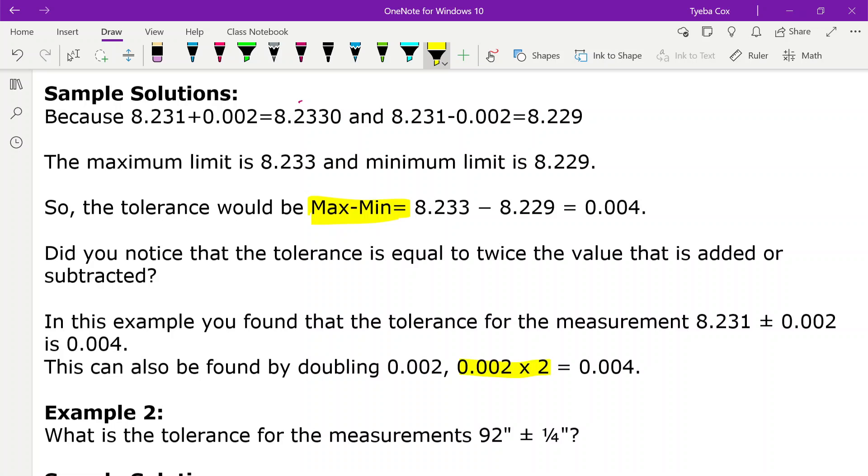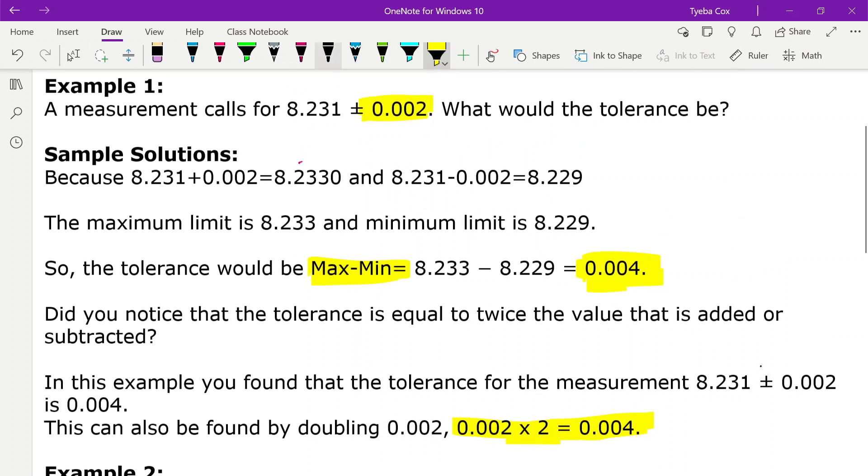we end up getting the same number here as we get for our tolerance. So you could either subtract the maximum and minimum, get the value, or you could just double the value that's being added or subtracted. Added and subtracted here is our tolerance.